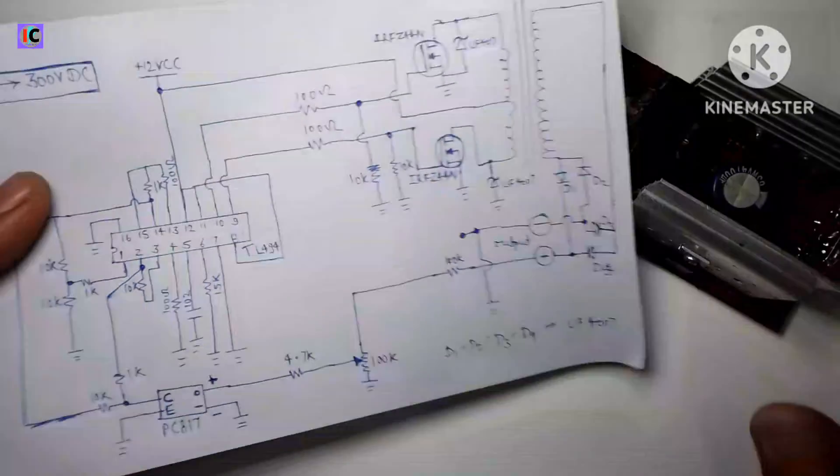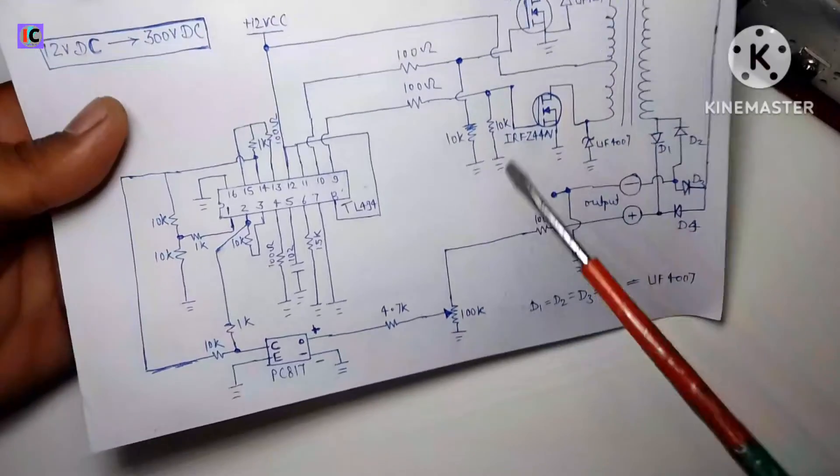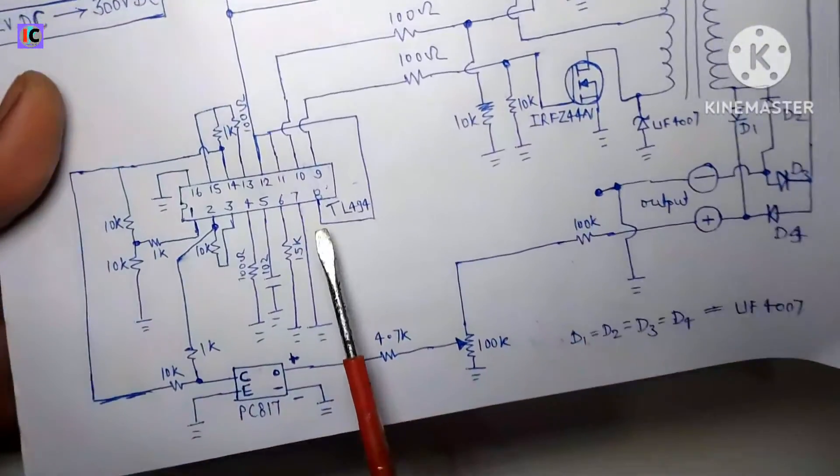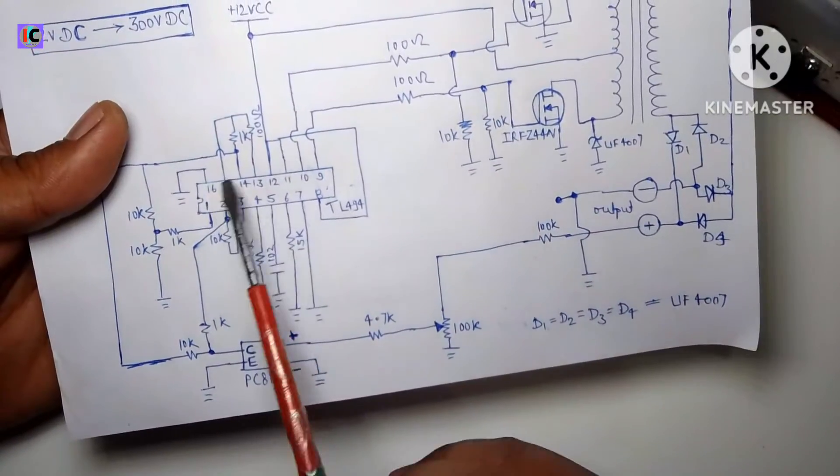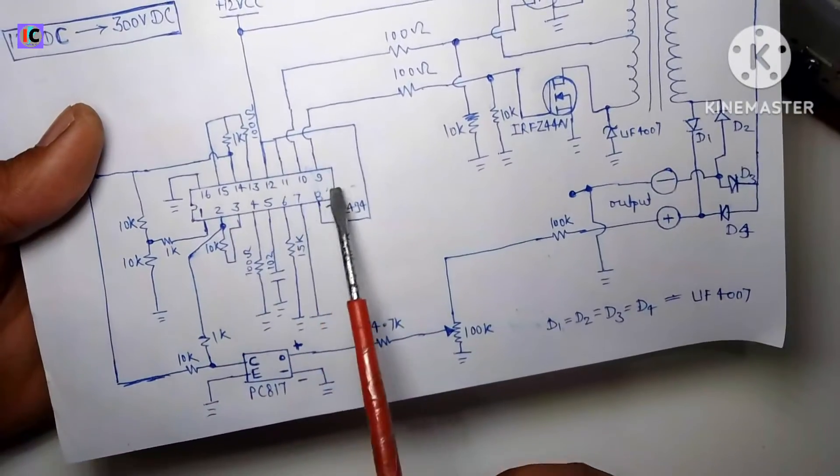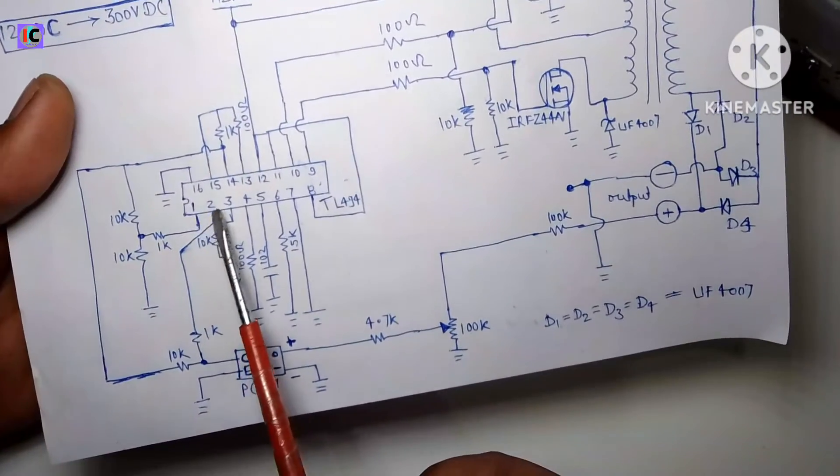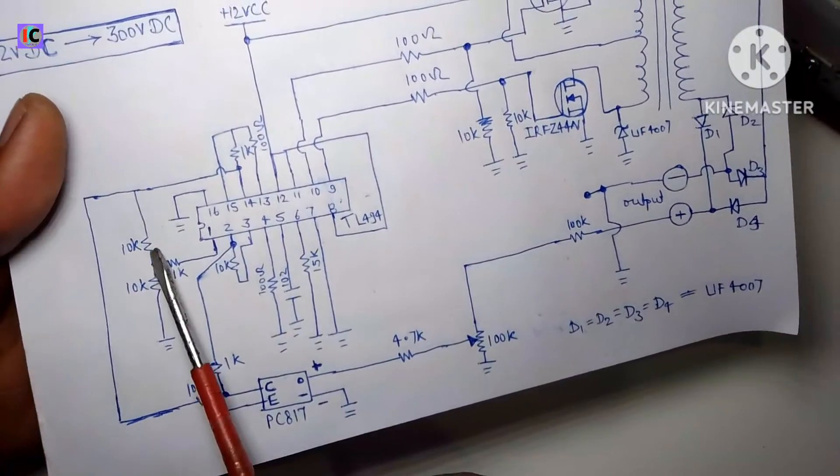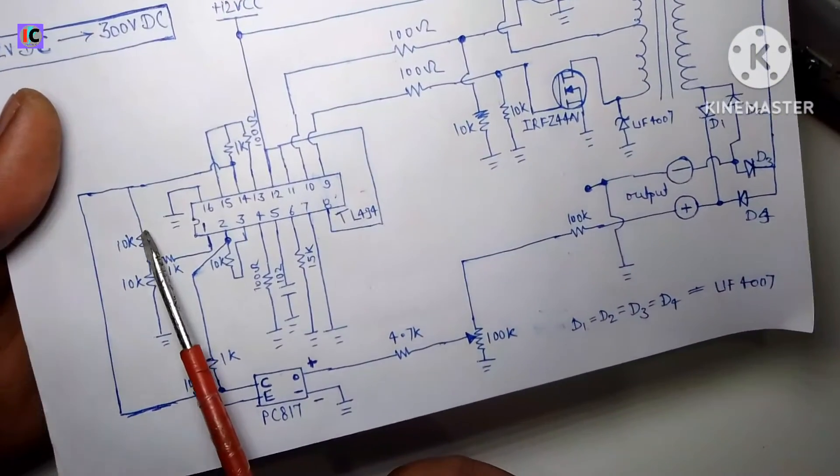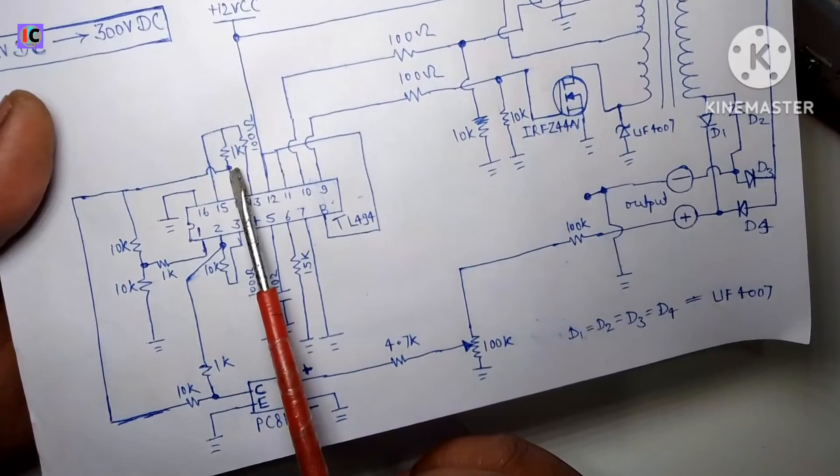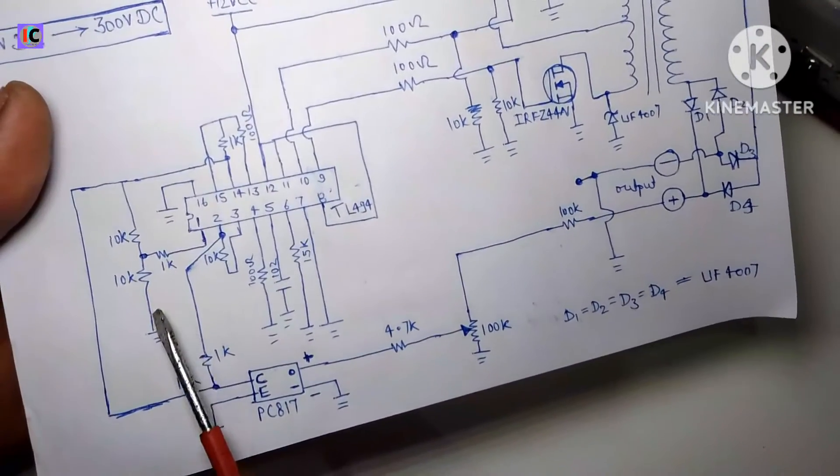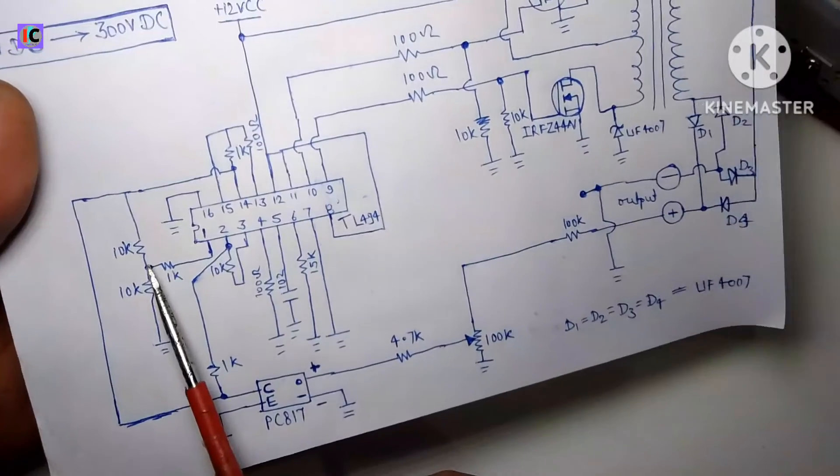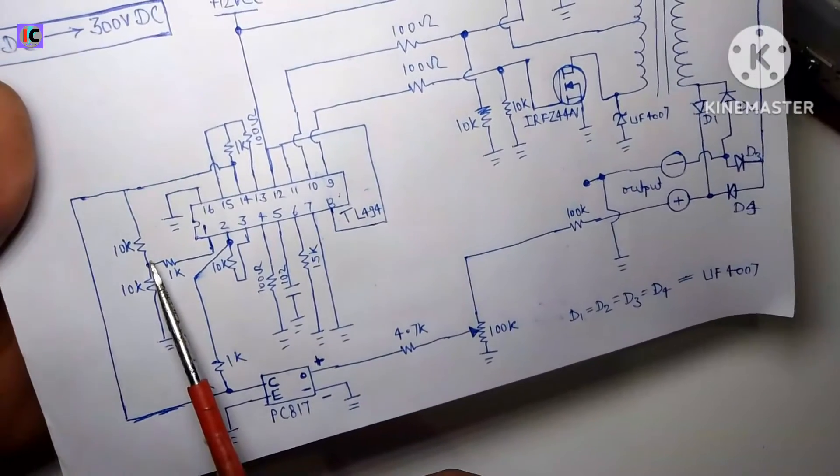circuit diagram. As you see, this is the TL494 IC and pin outs are like this. So here you can see pin number one, which is the voltage reference pin. I've made a 10 kilo ohm 5 volt reference and ground with 10 kilo ohm, so the middle point of this will be 2.5 volt